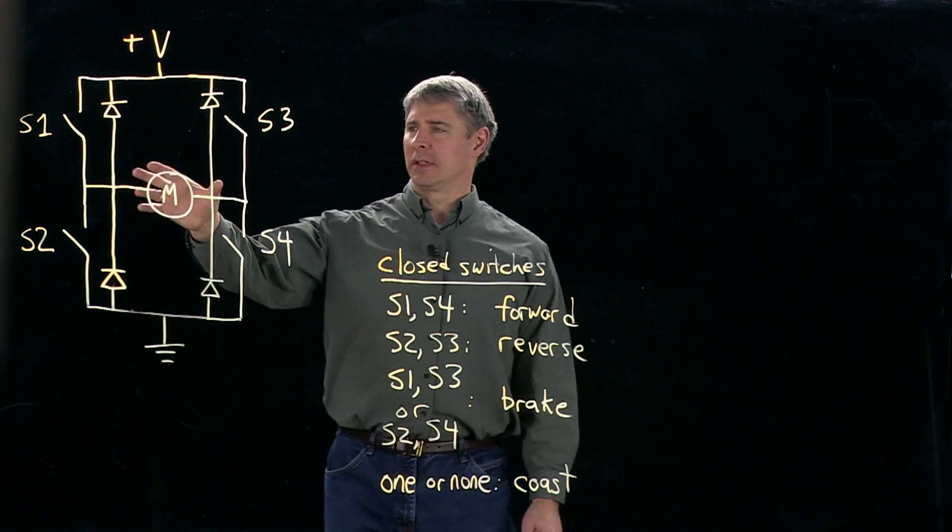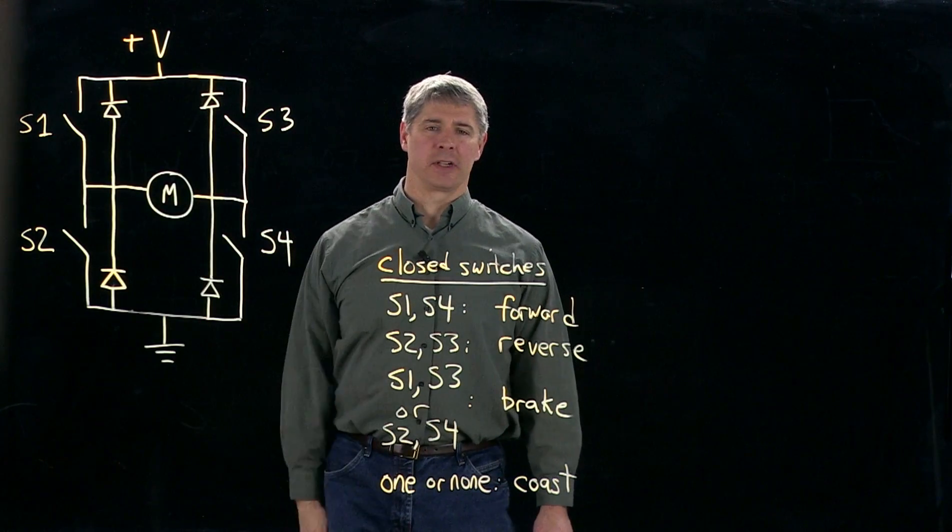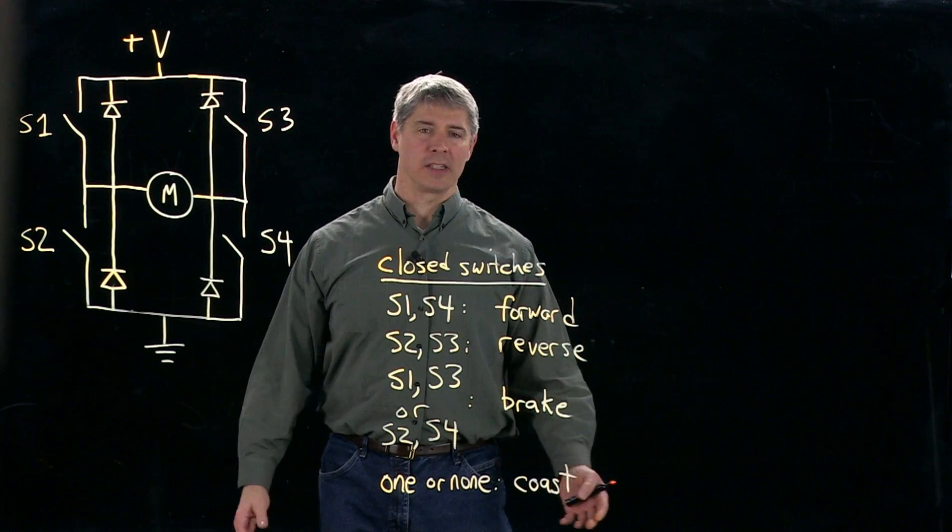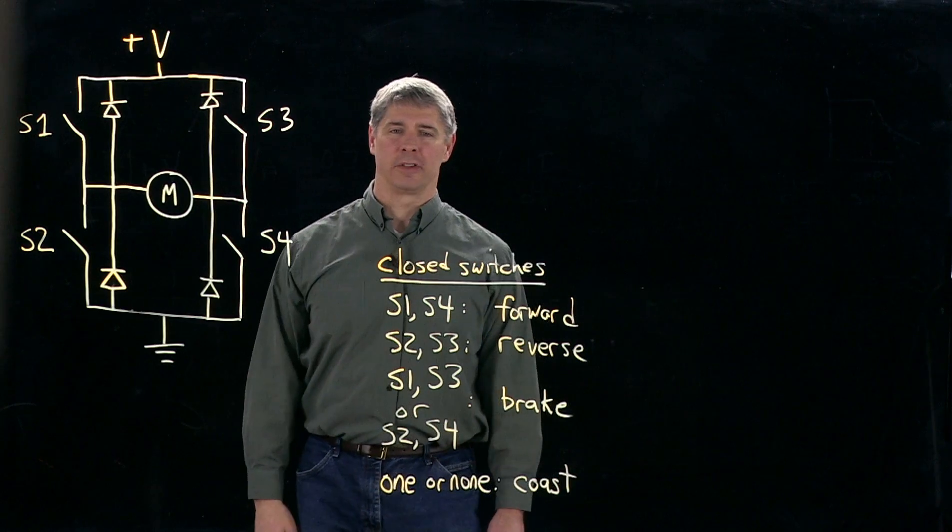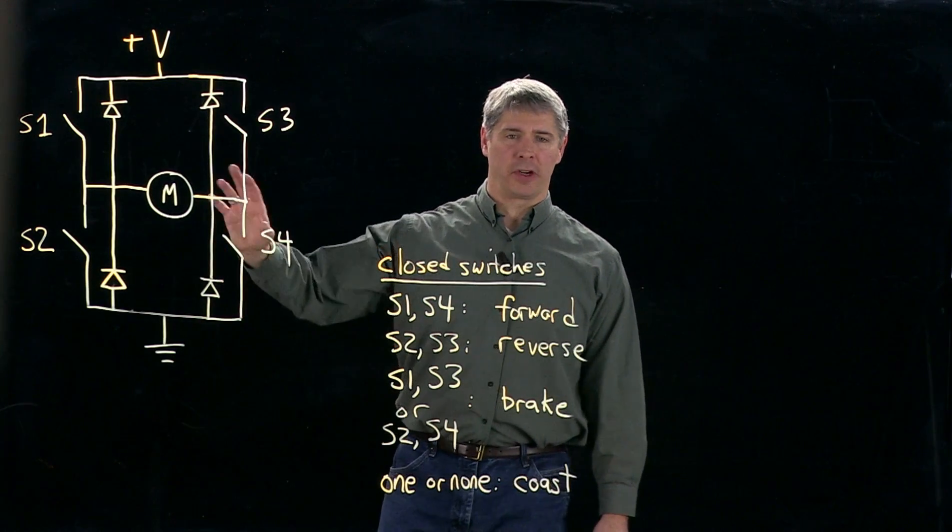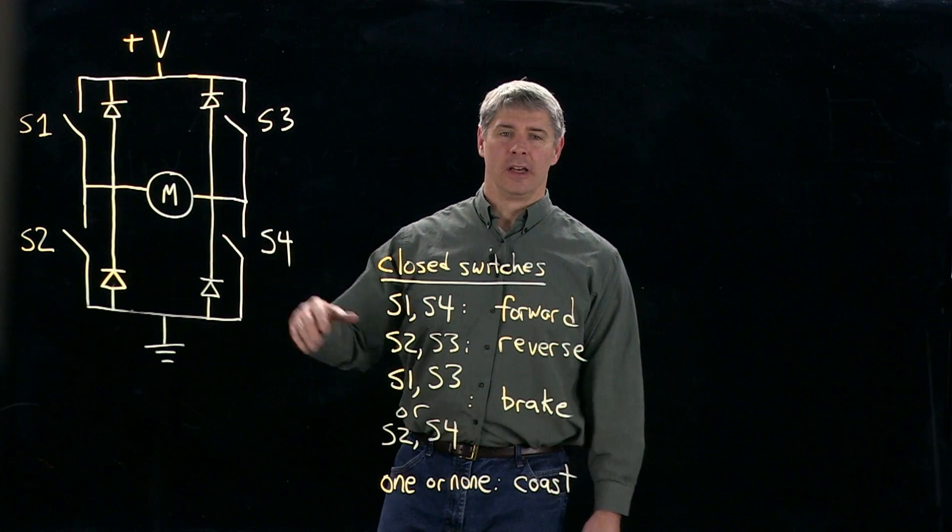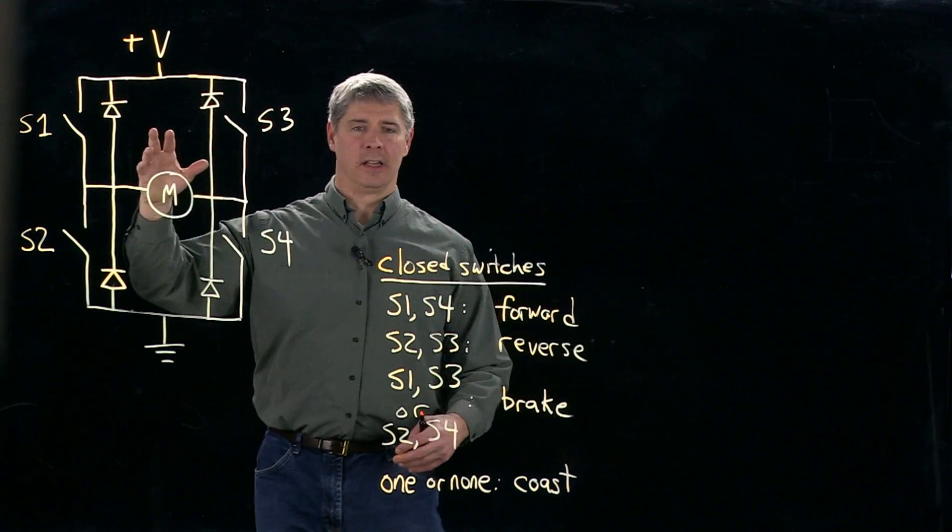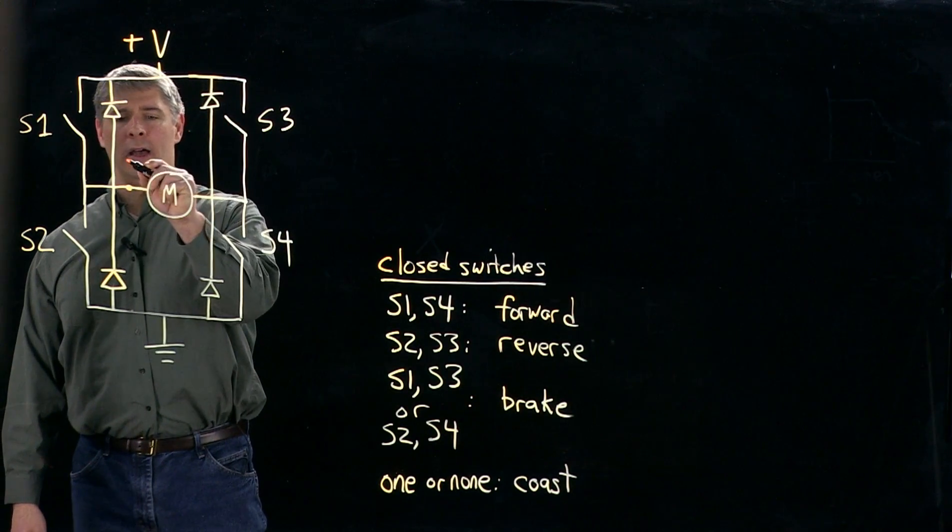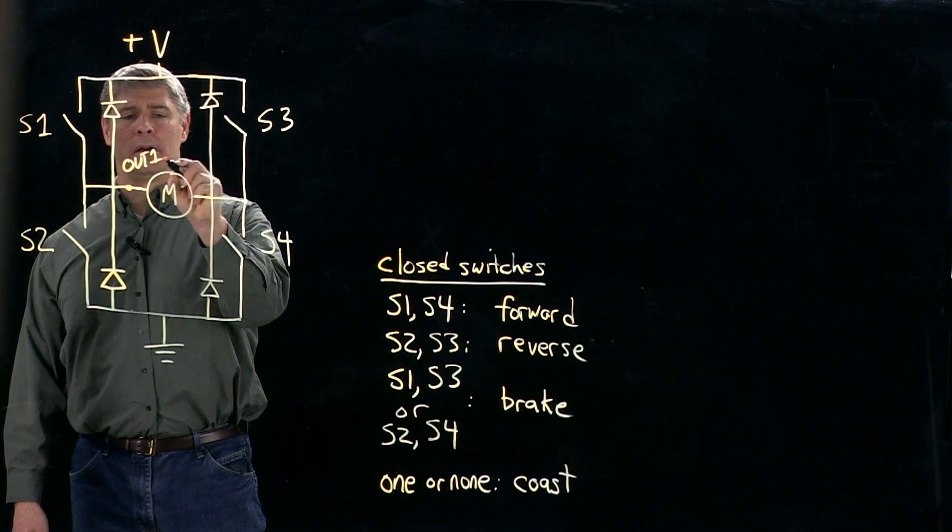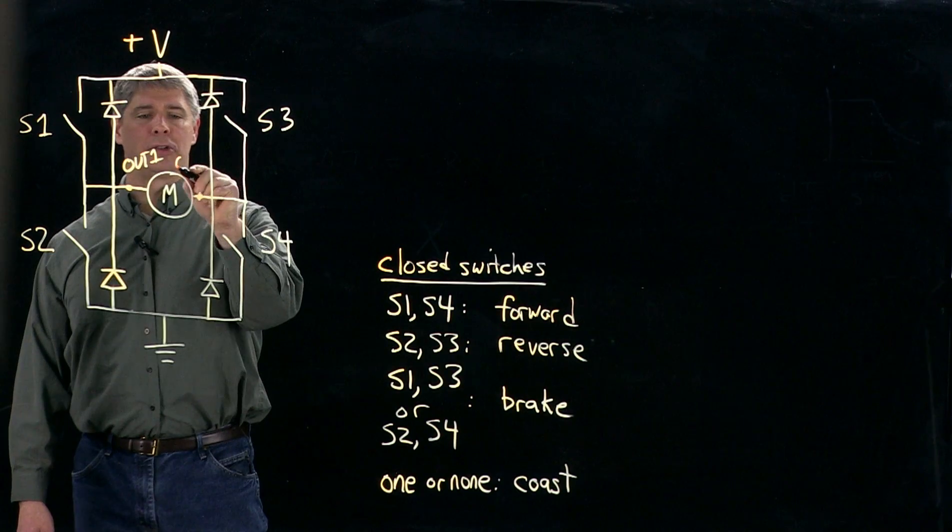Now you can build an H-bridge like this using four MOSFETs, for example, and four Schottky diodes on your own out of discrete components, but typically what you're going to do is buy an integrated circuit that already builds all of this in. And that integrated circuit is going to give you two outputs. Let's call it out one and out two.